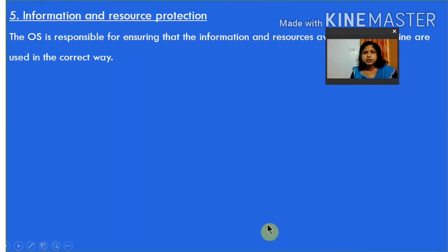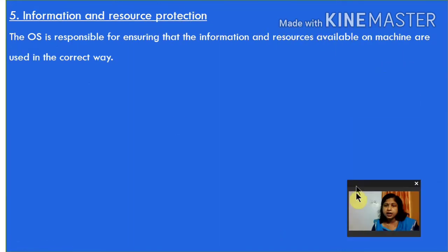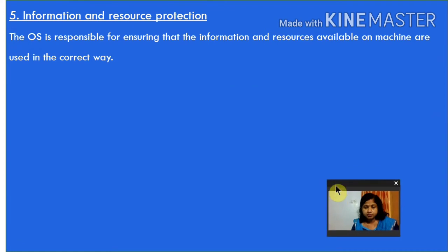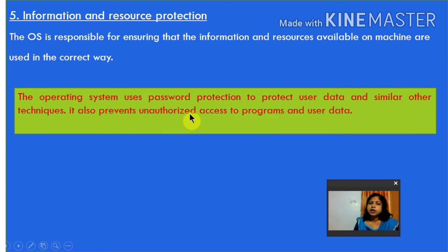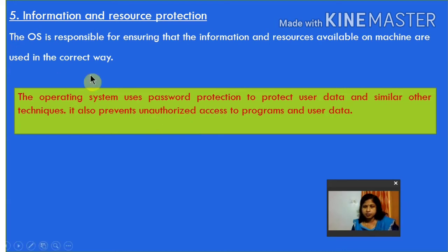Information and resource protection is another important function of the operating system. By using password protection — a unique username and password for each user — we can protect our information. This password protection is also handled by the operating system to give protection to our information.